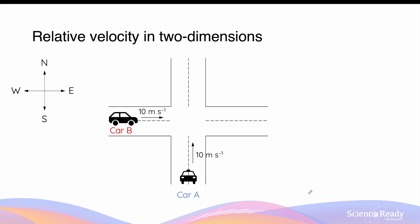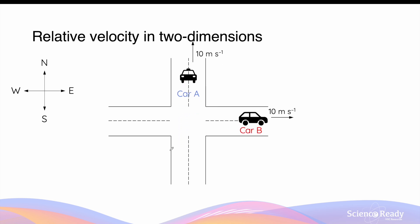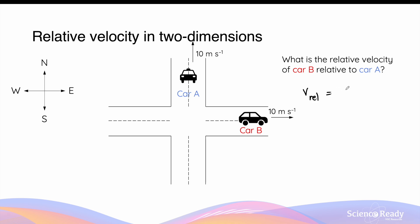Relative velocity of objects can also be determined when they are in two dimensions. Suppose there are two cars: Car A is travelling north at 10 meters per second, and Car B is travelling east at 10 meters per second as well. The first question is: what is the relative velocity of Car B relative to Car A? In other words, what is the velocity of Car B measured by someone in Car A? The relative velocity here is the velocity of Car B minus the velocity of Car A. When the vectors are in two dimensions, we cannot subtract the magnitudes directly because we need to account for direction.